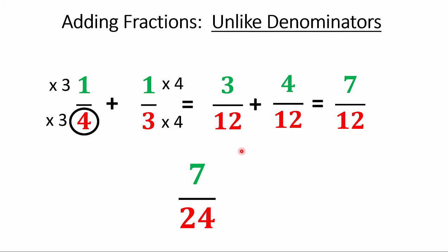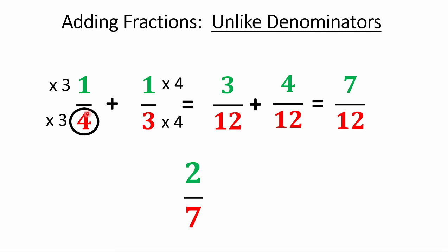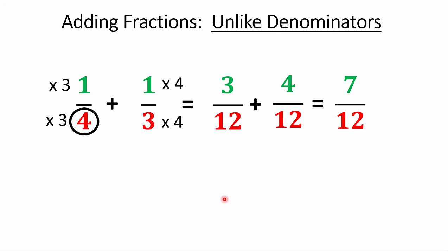Some people will write seven twenty-fourths because they added the denominators — we can clap for the effort but that's wrong. Others won't even bother making common denominators and will just add numerators and denominators separately to get two-sevenths. If you do it that way, I'll be so sad. We're better than that. We're in grade seven or eight — some parts of the world do this in grade four. Don't add numerators and denominators together; that is not the right method.